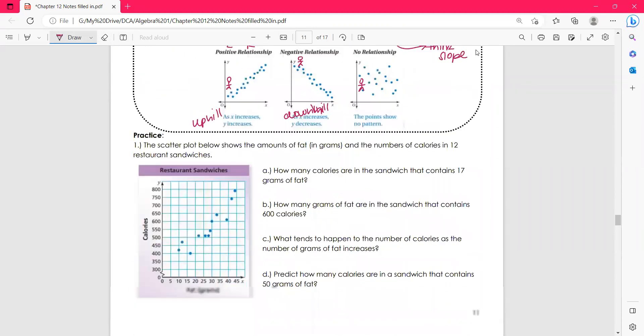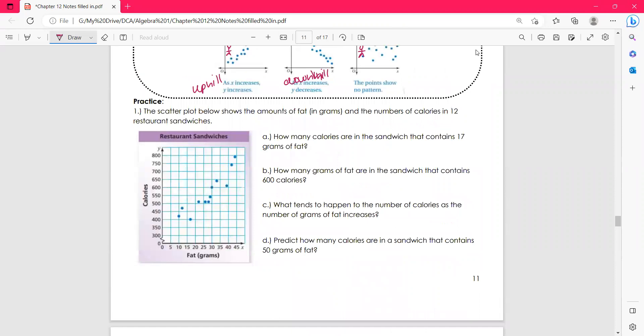Okay, so let's check out some practice. The scatter plot below shows the amounts of fat in grams and the number of calories in 12 restaurant sandwiches. How many calories are in the sandwich that contains 17 grams of fat? So if I go to fat in the graph and I find 17 and then I go up, I can find this point right here. That point is 17 grams. And then if I go over, we'll say 400 calories.